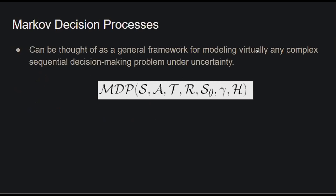Markov Decision Processes provide the general framework for modeling complex sequential decision-making problems. The notation includes the state space S, action space A, transition function T, reward function R, a set of initial states, the discount factor, and the horizon — the agent's perception of time.